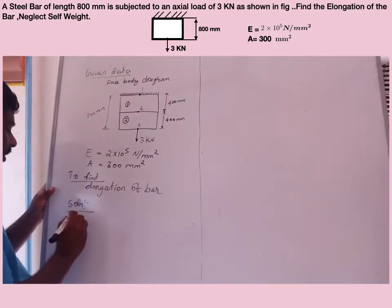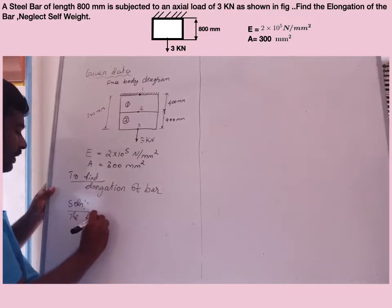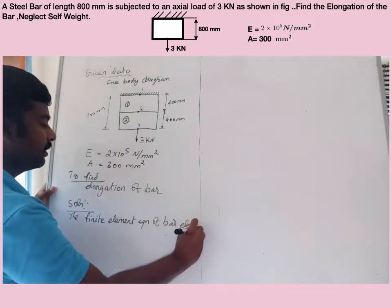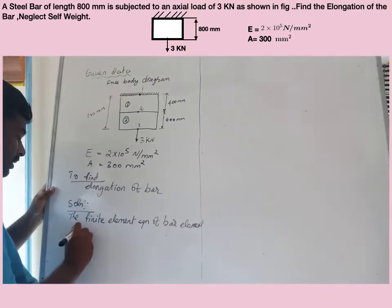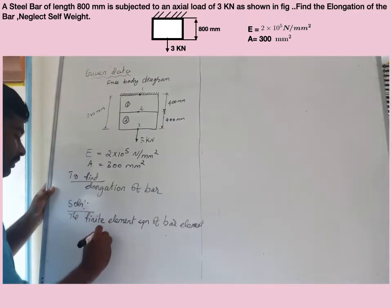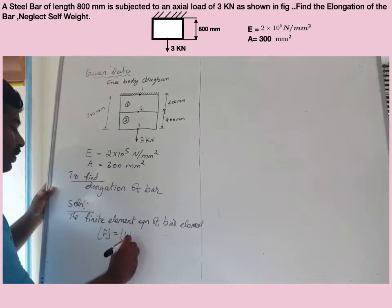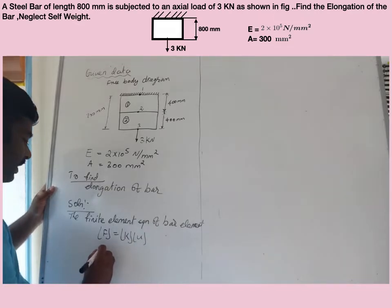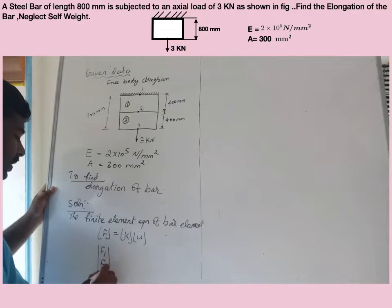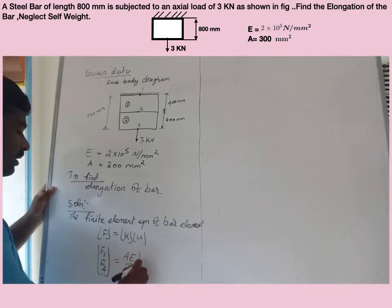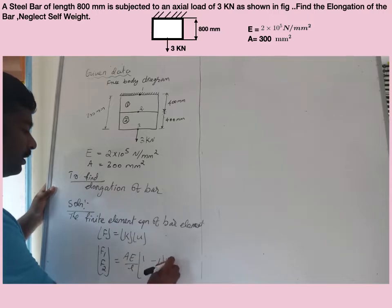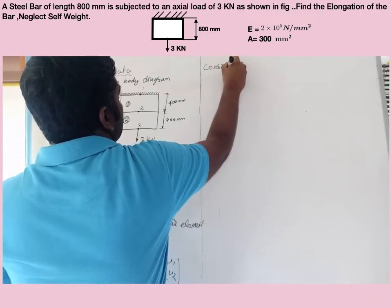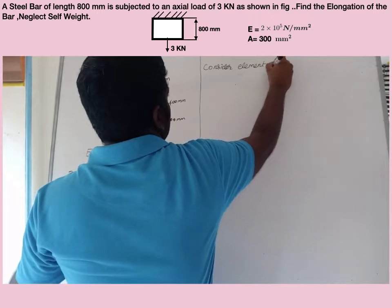The finite element equation of the bar element is given by F equal to K into U, where F is the body force vector, K is the stiffness of the element, and U is the nodal displacement. Therefore, F1, F2 equal to AE by L times the matrix [1, -1; -1, 1] times [U1; U2].